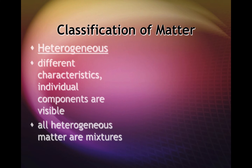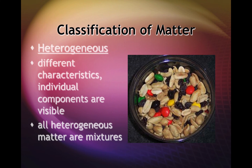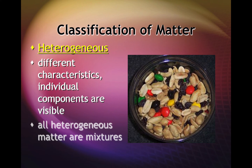The classification of matter. Matter can be homogeneous or heterogeneous, depending on its composition. Let's consider heterogeneous matter first. The prefix hetero means different type. Heterogeneous matter is made up of different types of matter — not evenly distributed, different characteristics — and you can see the individual components.